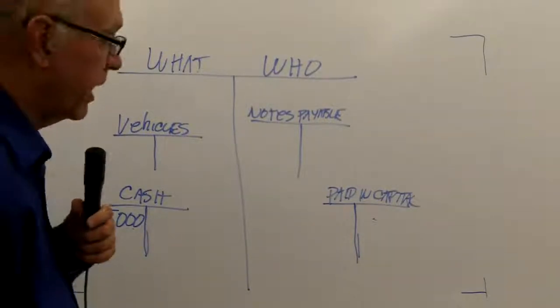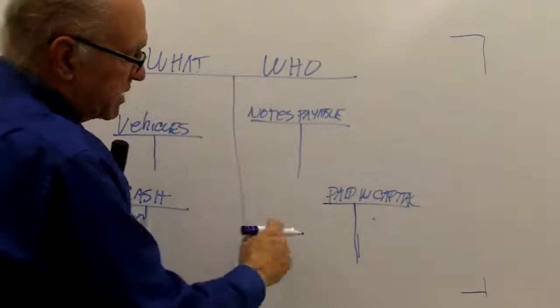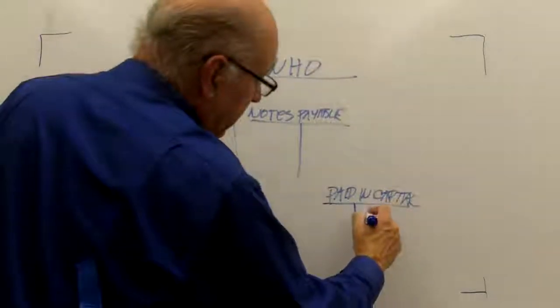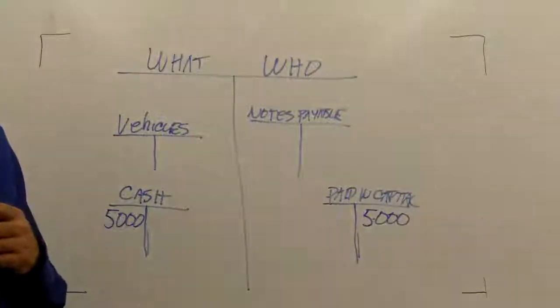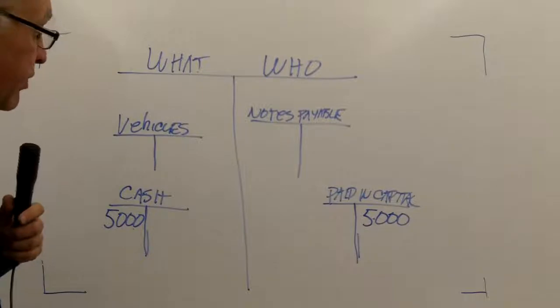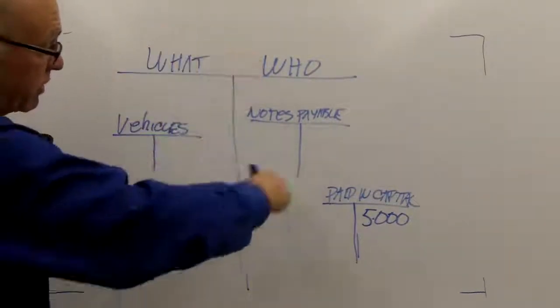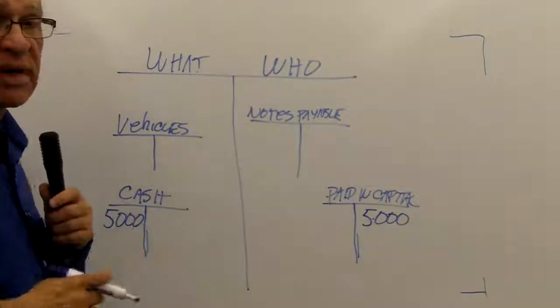My paid-in capital, that also increased. It's on the right-hand side of the big T. So it increases by entries in the right-hand side of the account. And thus, my overall T balances. My lefts equal my rights.